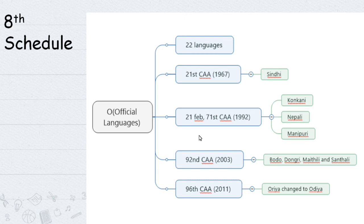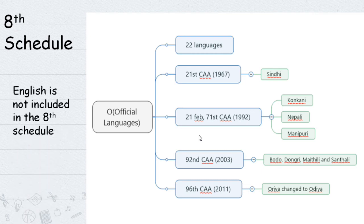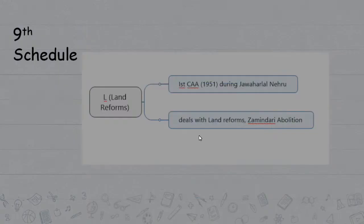The 92nd Constitutional Amendment in 2003 added Bodo, Dogri, Maithili, and Santhali - bringing the total to 22 languages. The 96th Constitutional Amendment Act in 2011 addressed Odia language. Other languages in the schedule include Manipuri, Bodo, Santhali, Brahmi script languages.